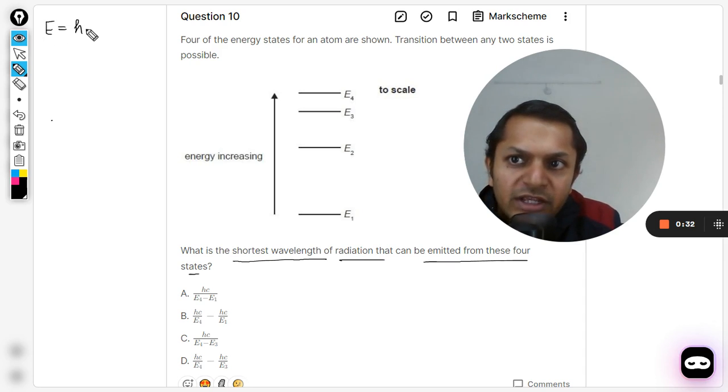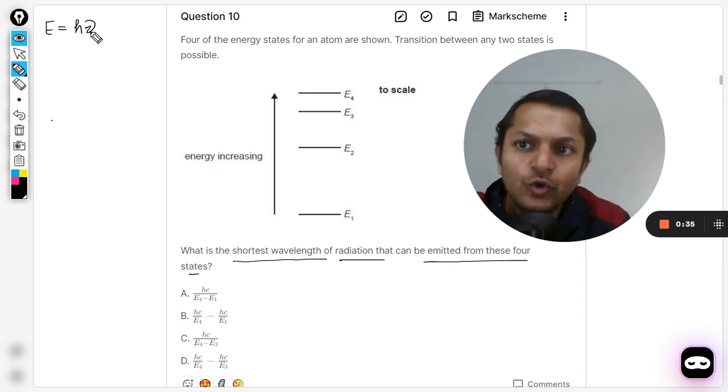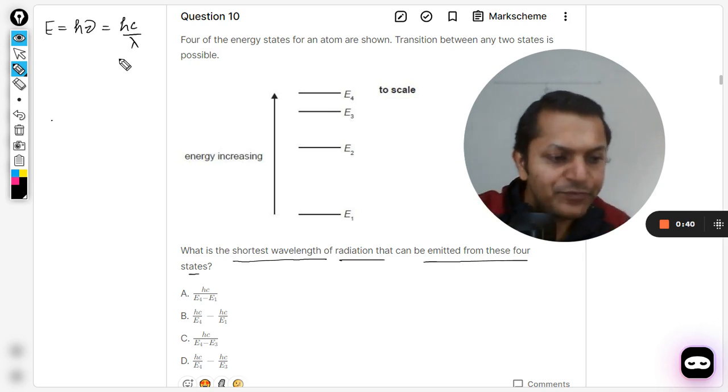First of all we must remember that the formula for the energy of a photon is E = h nu, where nu is the frequency which can also be written as hc by wavelength lambda.